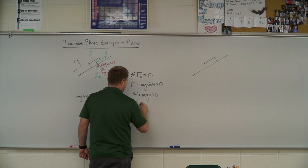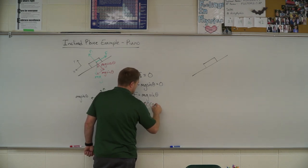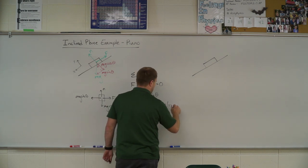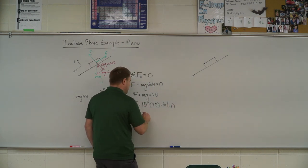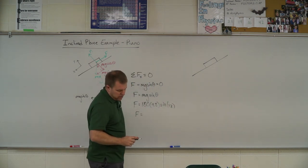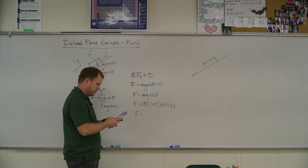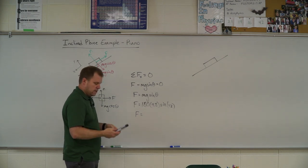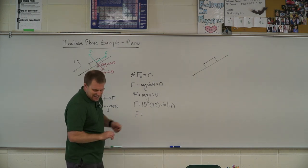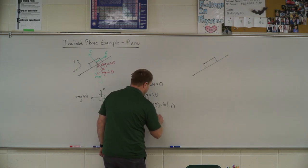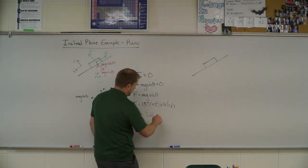So I have that applied force minus mg sine theta equals zero. So f is equal to mg sine theta. They give me all that information. So f is equal to 180 times 9.8 times the sine of 12 degrees. So the applied force of our person here comes out to, I guess I got to calculate this quick, 367-ish. Well, let's give it a couple more digits. 366.76. Alright.